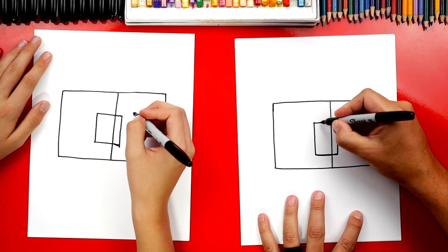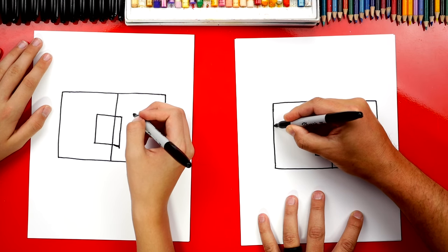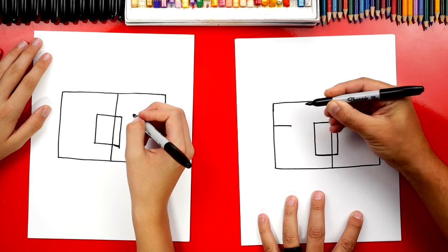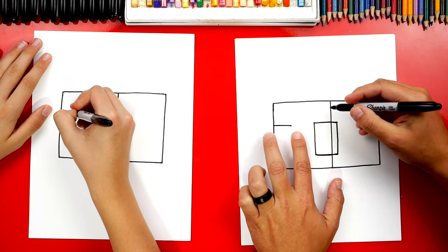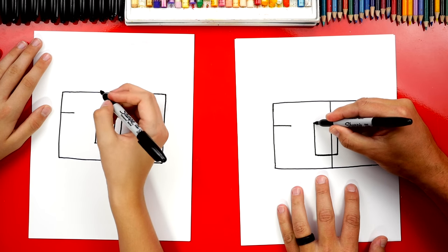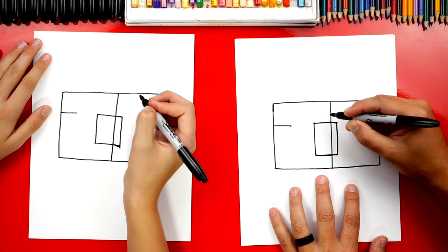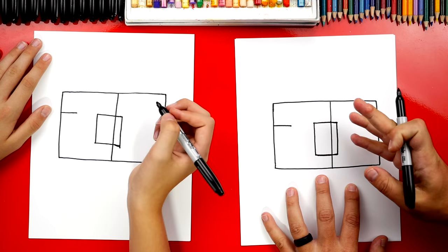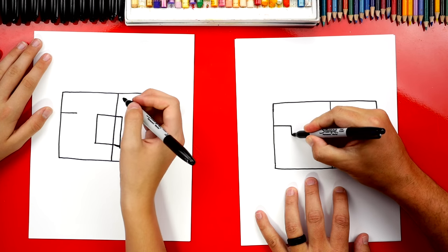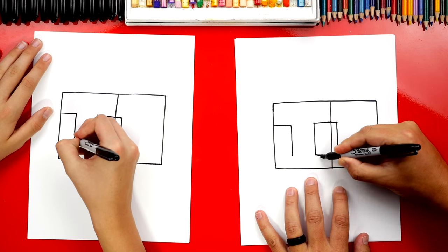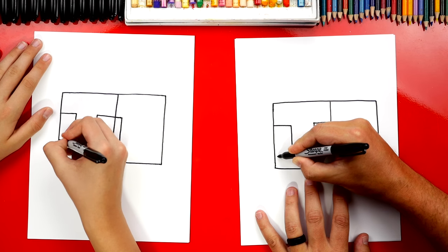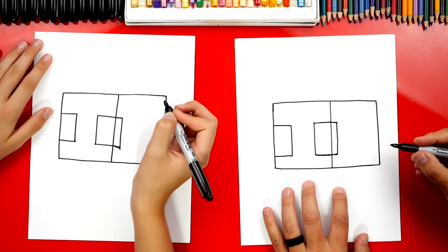Now we're gonna come across. We want it to be the same height as the first eye and we're gonna draw another line across. Now we want this length right here to be the same length as from here to here because the side of the eye wraps around the corner of the bee. Then we're gonna draw a line down and this is gonna line up with the bottom of the eye and then across.